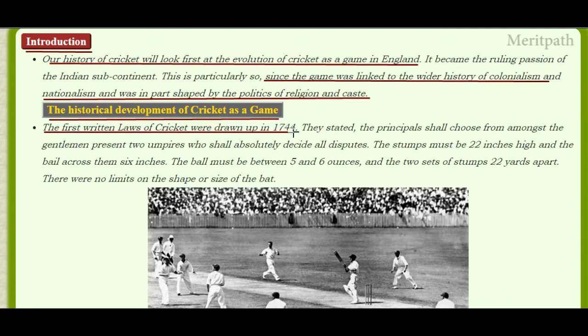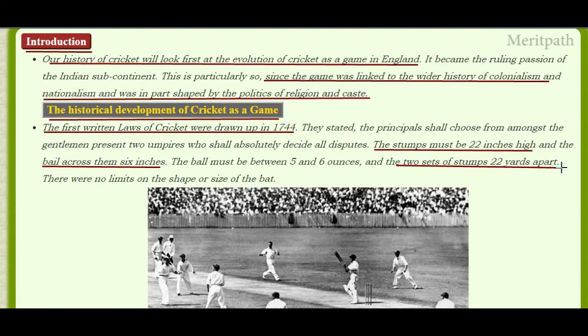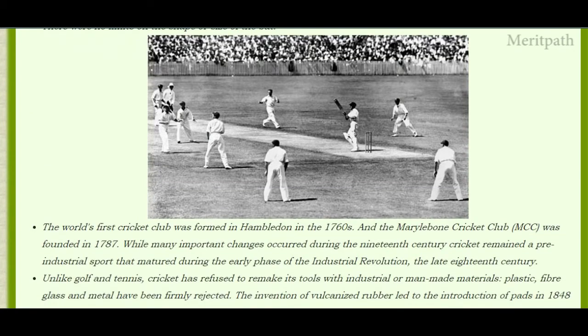The first written laws of cricket were drawn up in the year 1744. They stated that the principals shall choose from among the gentlemen present two umpires who shall absolutely decide all disputes. The stumps must be 22 inches high and the bail across them should be 6 inches, the ball must be between 5 and 6 ounces, and the two sets of stumps must be 22 yards apart. There were no limits on the size or shape of the bat.